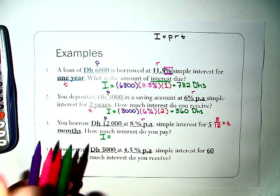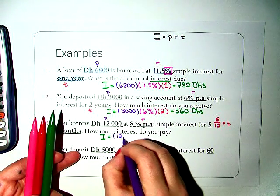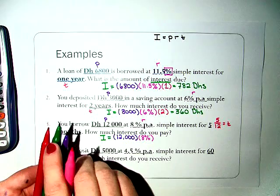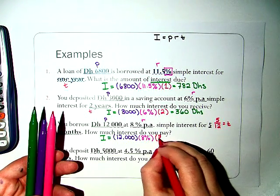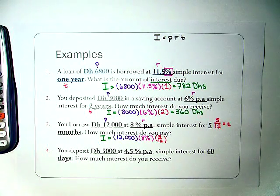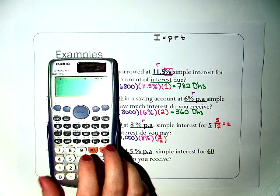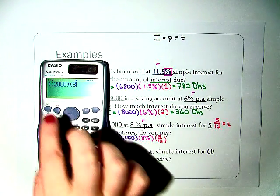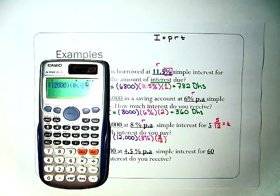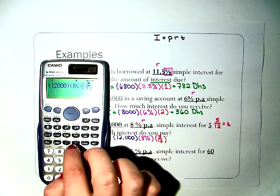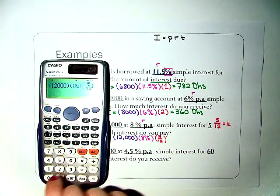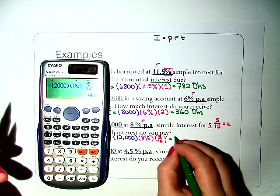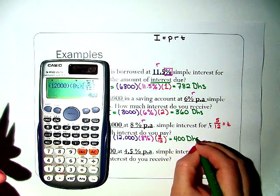So let's write this out: I equals 12,000 multiplied by 8% and multiplied by 5 over 12. And we are going to put it in the calculator just like this. So we start with 12,000 times 8, put our percent symbol, times, and this is a fraction, 5 over 12. We need to move our cursor over before hitting close parentheses. And so we get that the interest is 400 dirhams.